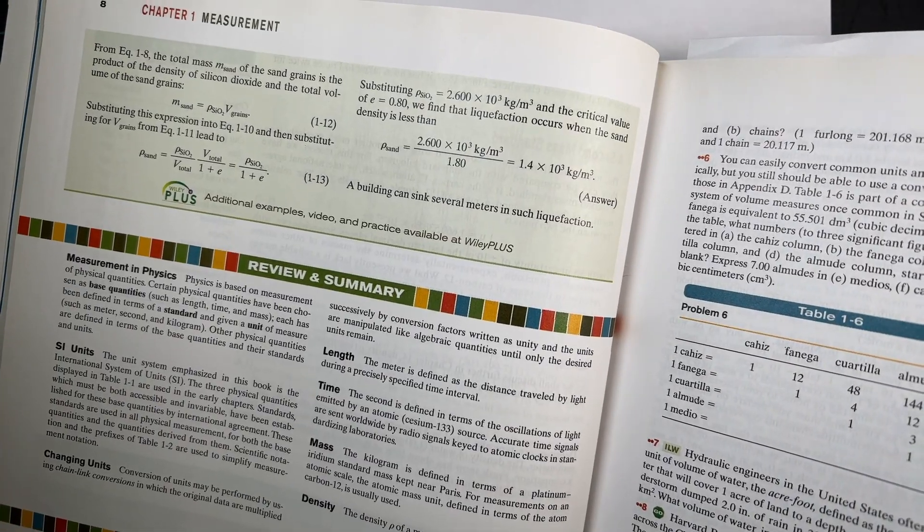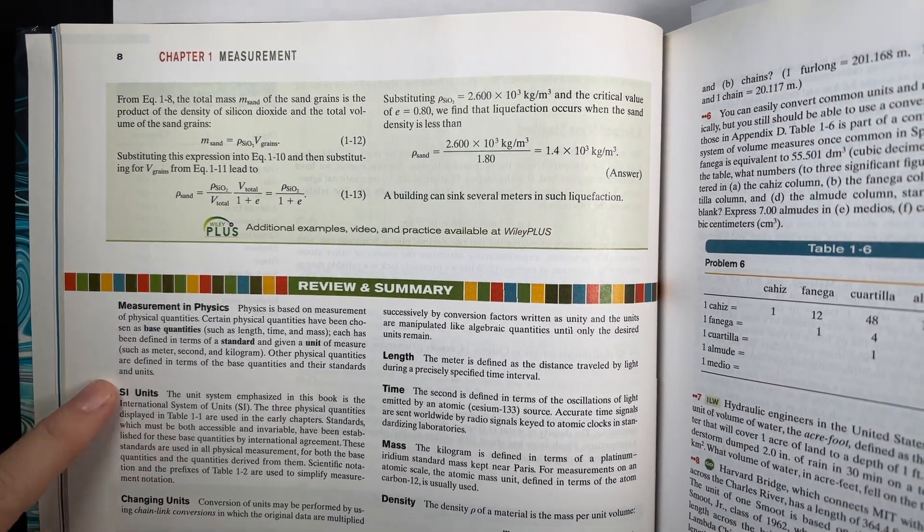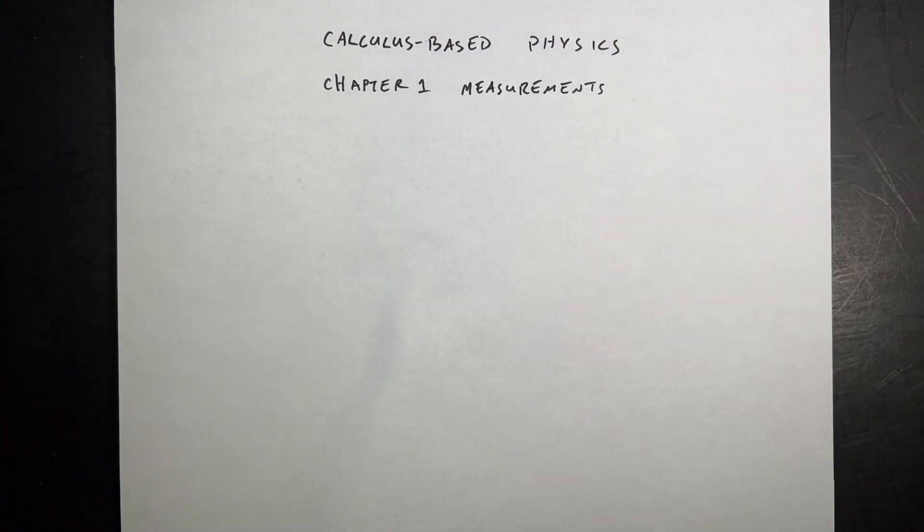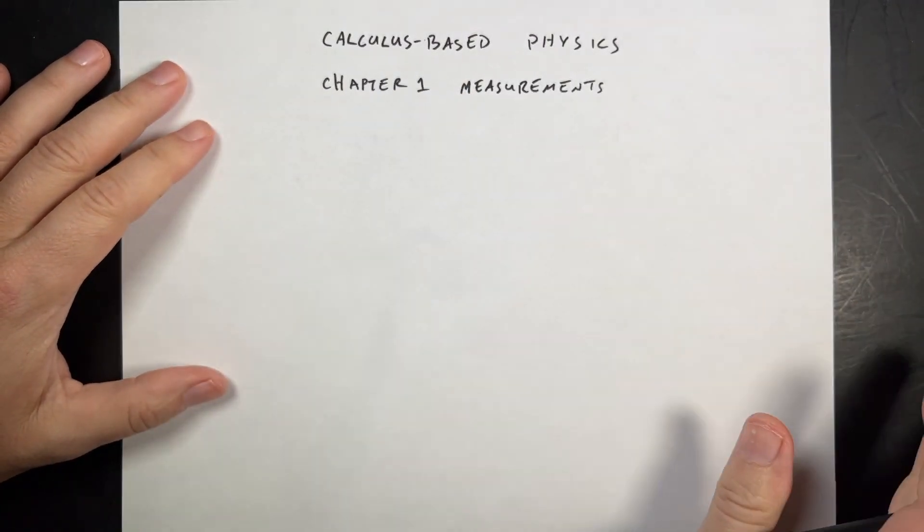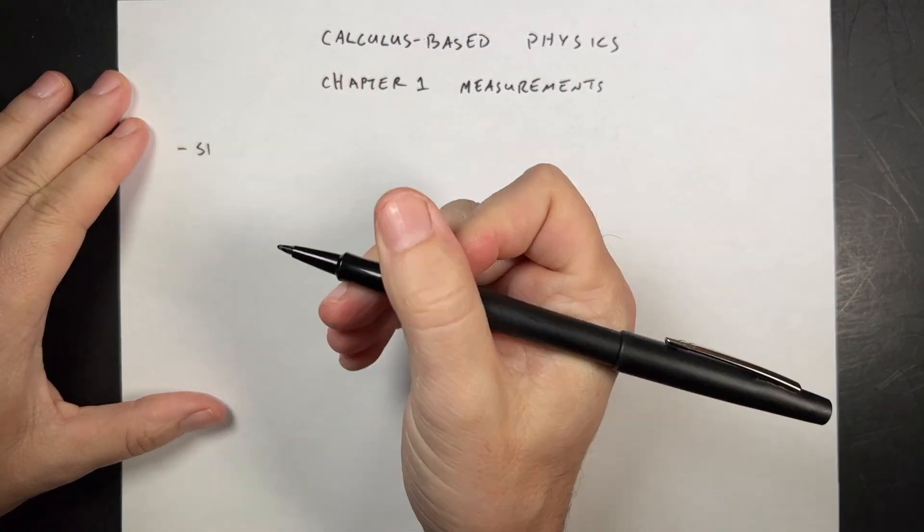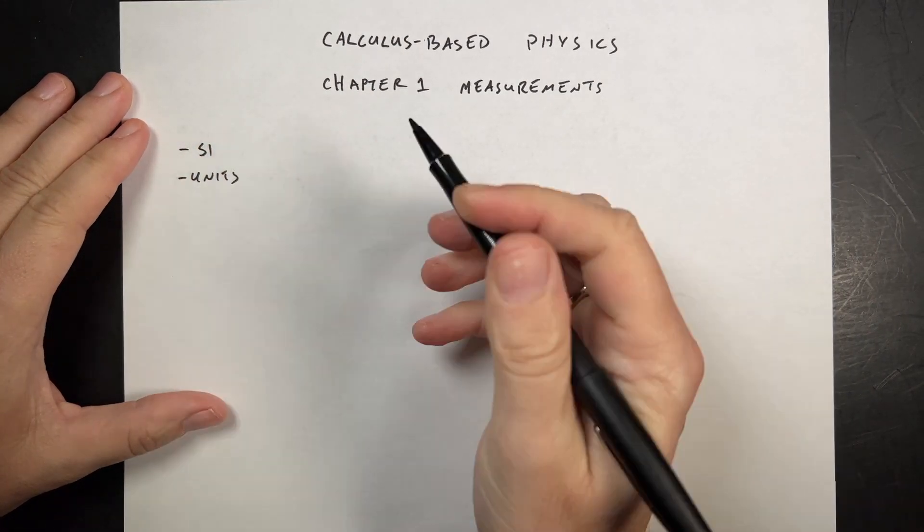This chapter is on measurement and if you look at the review summary right here, SI units, measurements, changing units, and there's really not a lot here. So instead let me do the following. Say this is your first semester, a lot of people just skip that chapter anyway. Let me put a little note here, SI units, that's really the only thing in there. Let's go ahead and do that.